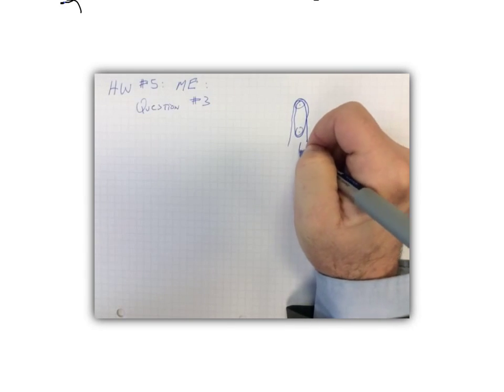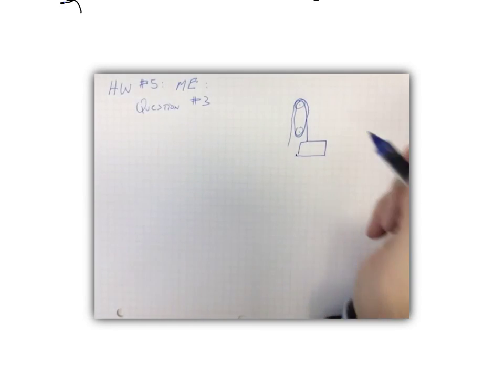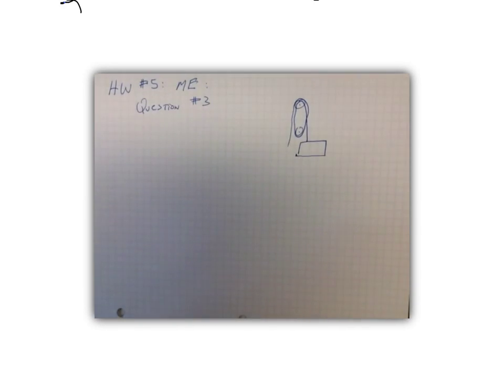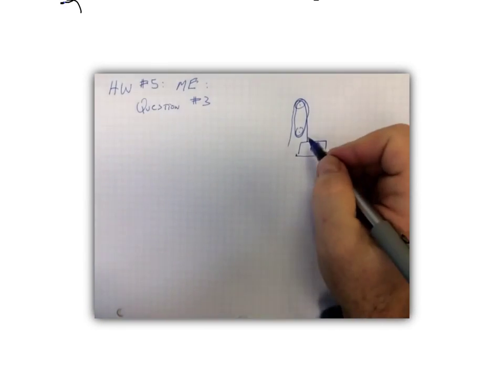And then down and connect to the load. In this case, the load has a mass of 2,500 newtons. It's an engine block, so let's put that right in there: a 2,500 newton engine block.